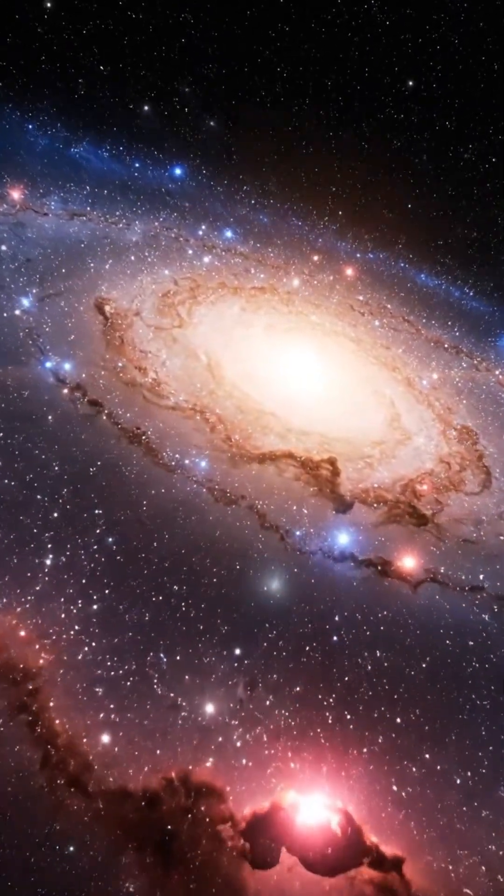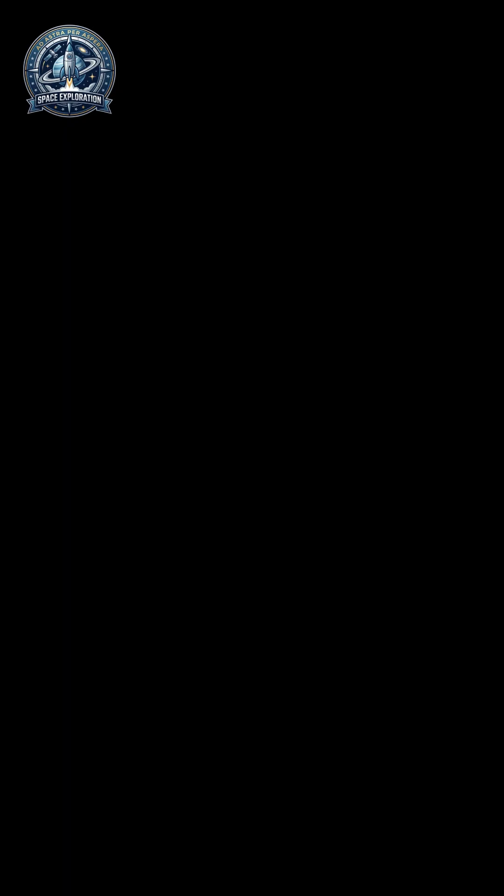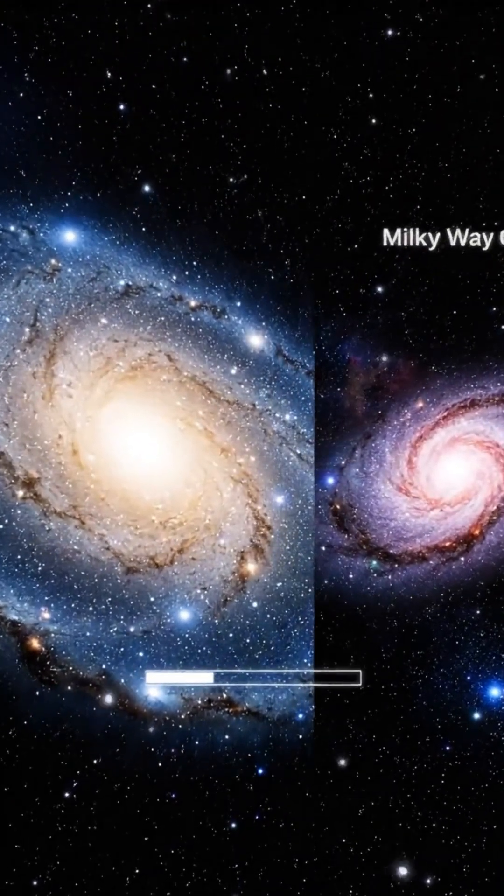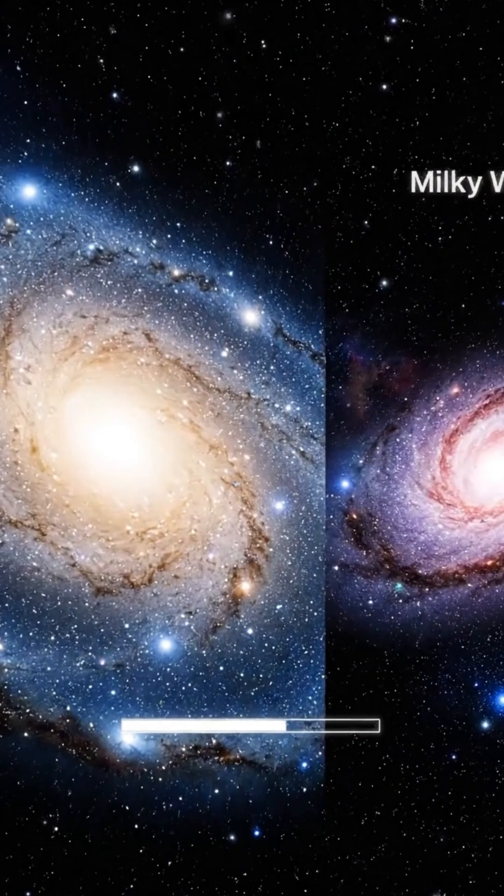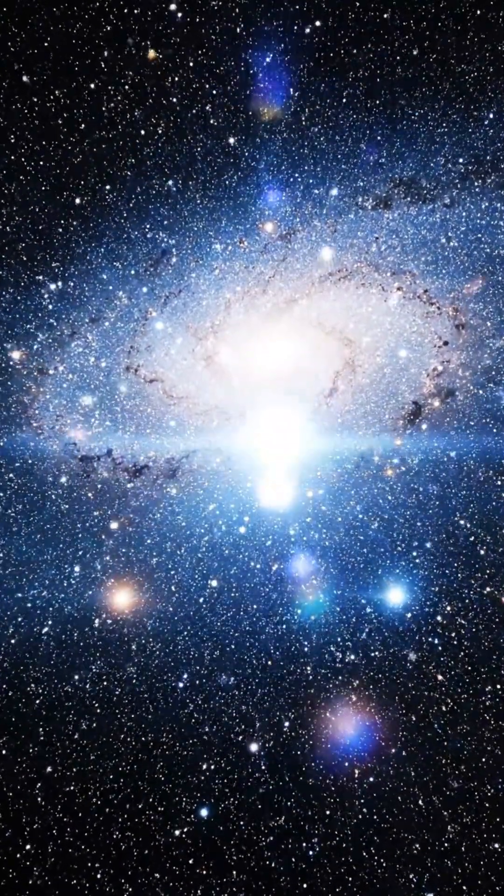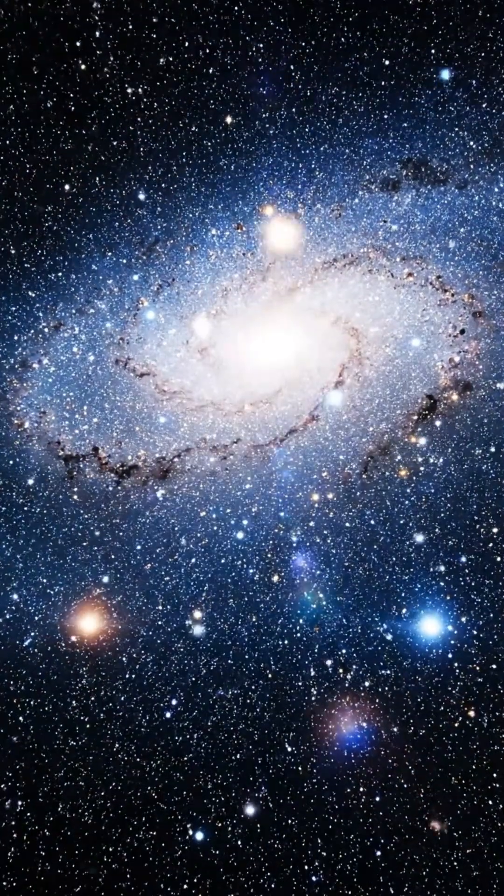Historically, Andromeda (M31) was considered the clear winner, spanning approximately 220,000 light years in diameter—nearly double the width of the Milky Way. It boasts a staggering 1 trillion stars compared to our 200 to 400 billion.